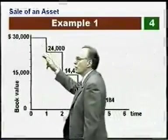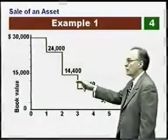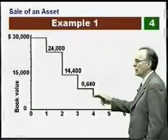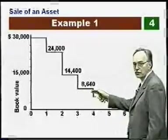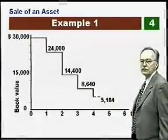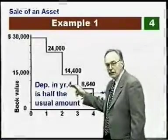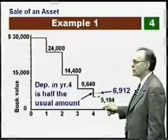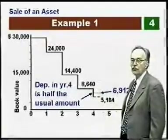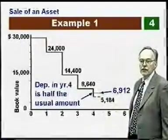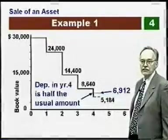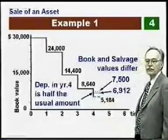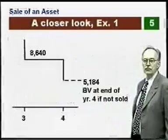Graphically, the book value drops in the usual fashion: $24,000, $14,400, $8,640, and $5,184. We're selling the asset in the fourth year, presumably near the end of the year. Because of this, the depreciation in year four is half the usual amount, so the book value becomes $6,912. Additionally, the book value does not equal the salvage value — our salvage value is $7,500, a little above the book value.